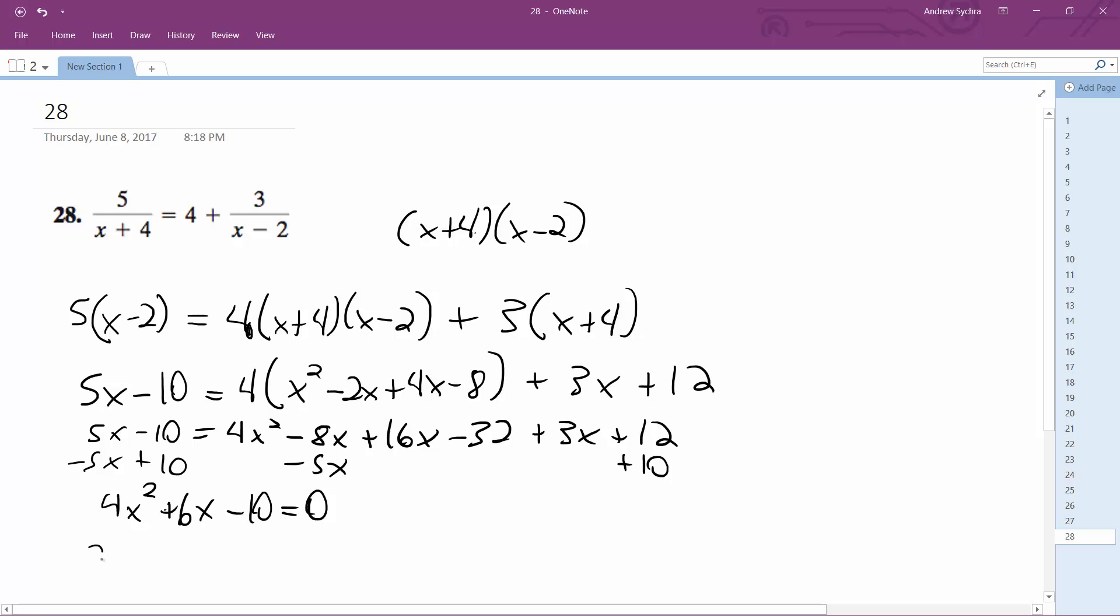And this factors down to 2 times quantity (2x+5) and then (x-1) equals 0. Ultimately, from the zero product property we get x equals negative 5 over 2 and 1. That's it, we solved it!